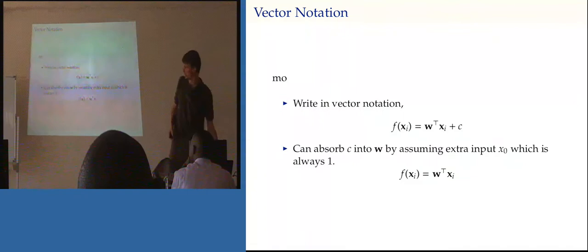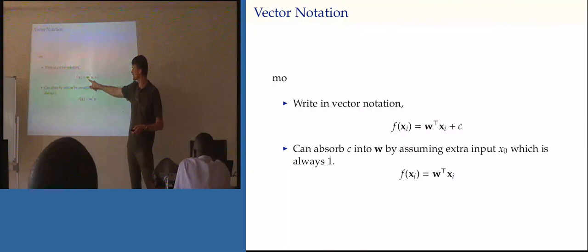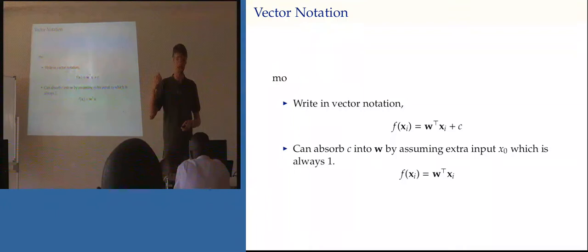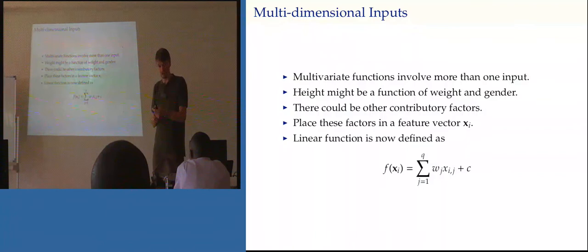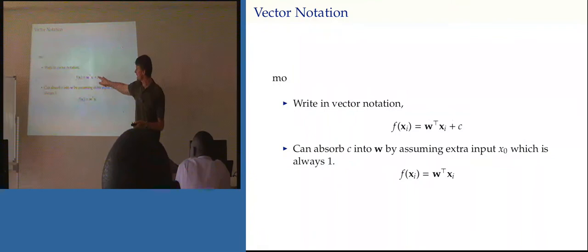We can write this in vector notation, and linear algebra is really where it's at for these models — it's a very compact form. This is just an inner product. What we're going to use are the rules of matrix differentiation to do the optimization needed to discover W. That's why we need linear algebra — doing differentiation directly on scalars is much more involved, either requiring iterative solutions or clever substitutions. Using matrix algebra it's just trivial.